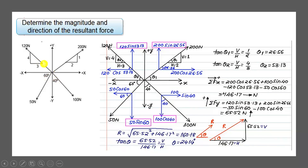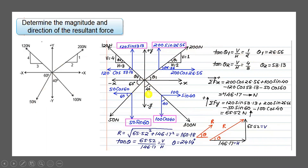Similarly, for the 120 N force, let theta 2 be the angle with the horizontal. Tan theta 2 equals vertical divided by horizontal, which is 4/3. This gives theta 2 equals 53.13 degrees. So now we know all four angles: 200 N force is at 26.56 degrees, 120 N force is at 53.13 degrees, 50 N force is at 60 degrees with horizontal, and 100 N force is at 40 degrees with the vertical.